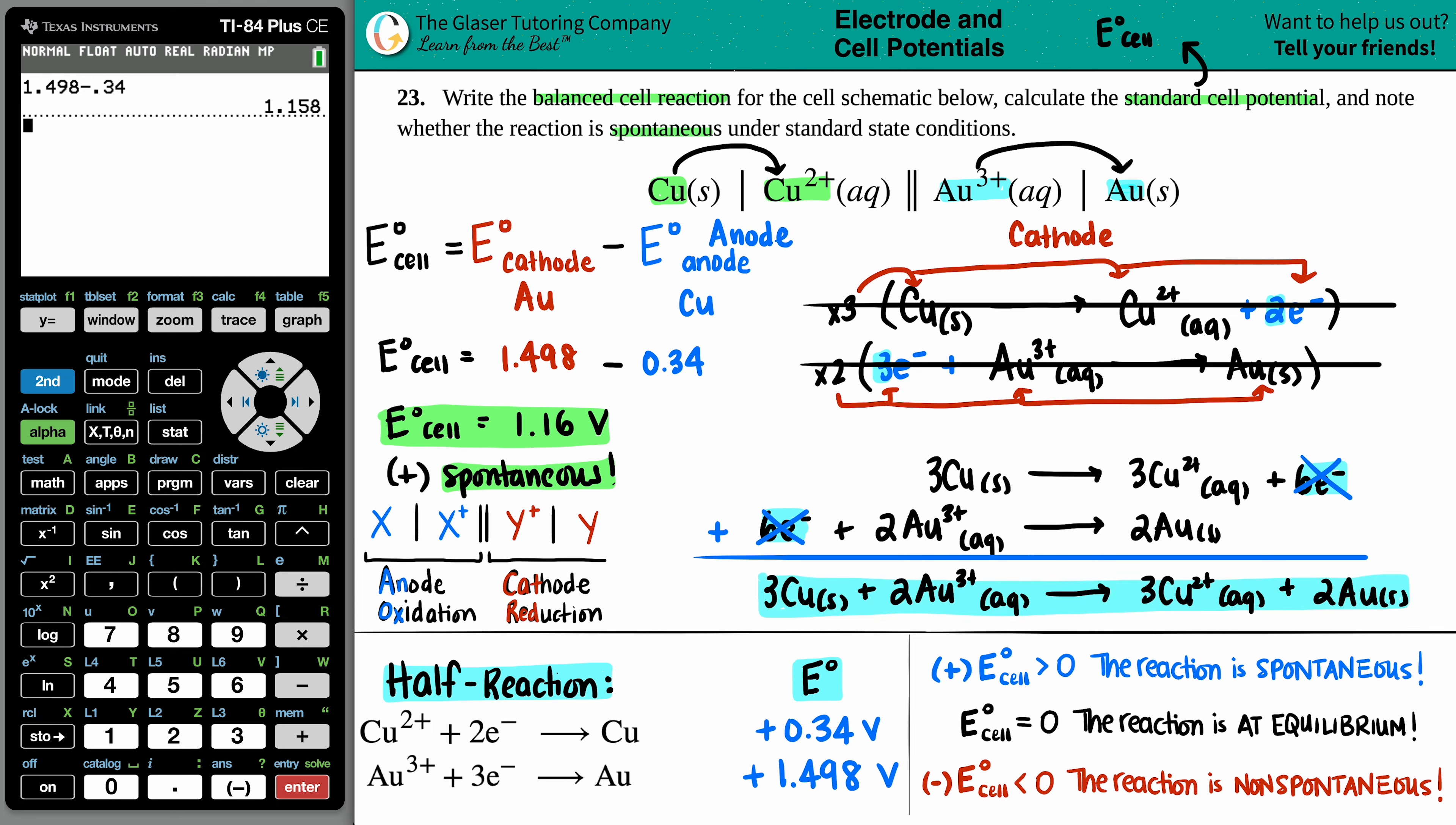I also just want to point out that here we had coefficients three, two, three, two, but it made no difference when we took those values. So don't get tricked. Those coefficients mean nothing when you're trying to do the E cell value. I hope this helped. Let me know in the comments. Thank you so much for viewing the video. Subscribe to the channel. And I hope you guys are having a great day. I'll talk to you soon.